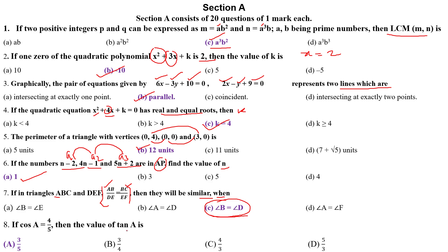Cos A equals 4 upon 5, then value of tan A. First you find out, draw a triangle. Then you have to apply here. It is the right angle triangle. 4 upon 5 is base upon hypotenuse. Apply the Pythagoras theorem. Perpendicular will be 3. What will be tan A? Tan A will be 3 upon 4. Which option is the correct answer? Tan A is 3 upon 4. Option B is 3 upon 4.